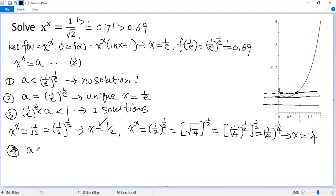Finally, if a greater than or equals 1, then y equals a would look like this one. So we only have one intersection. So one solution. For example, x to the power of x equals 27. You can write it as 3 to the power of 3. So the unique solution would be x equals 3.